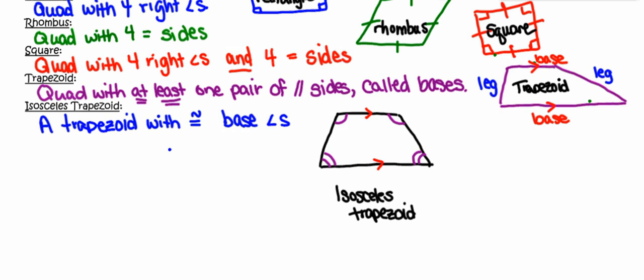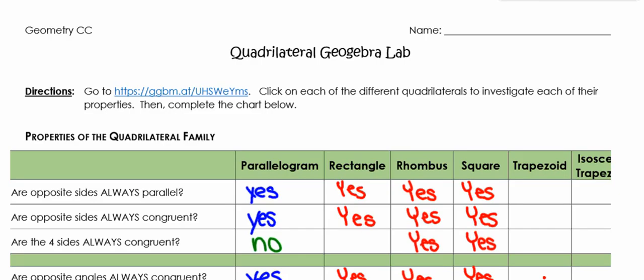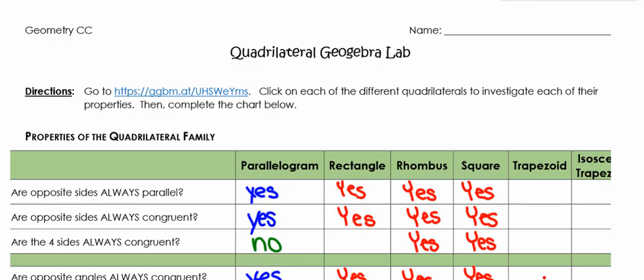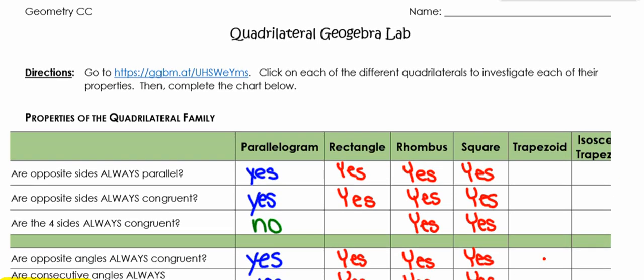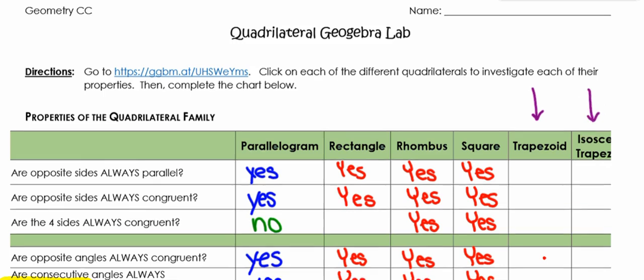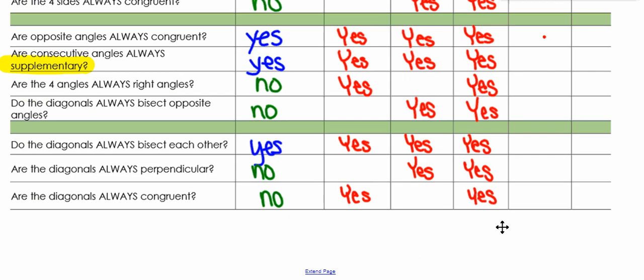All right next up on the agenda is we are going to go back into GeoGebra and remember if you need that link that link can be found in Teams. What we're going to do is fill out or finish filling out our chart. We're going to fill in each of the properties for the trapezoid in the isosceles trapezoid. When you are done, I want you to jump into the notes section in the class notebook and check your answers.